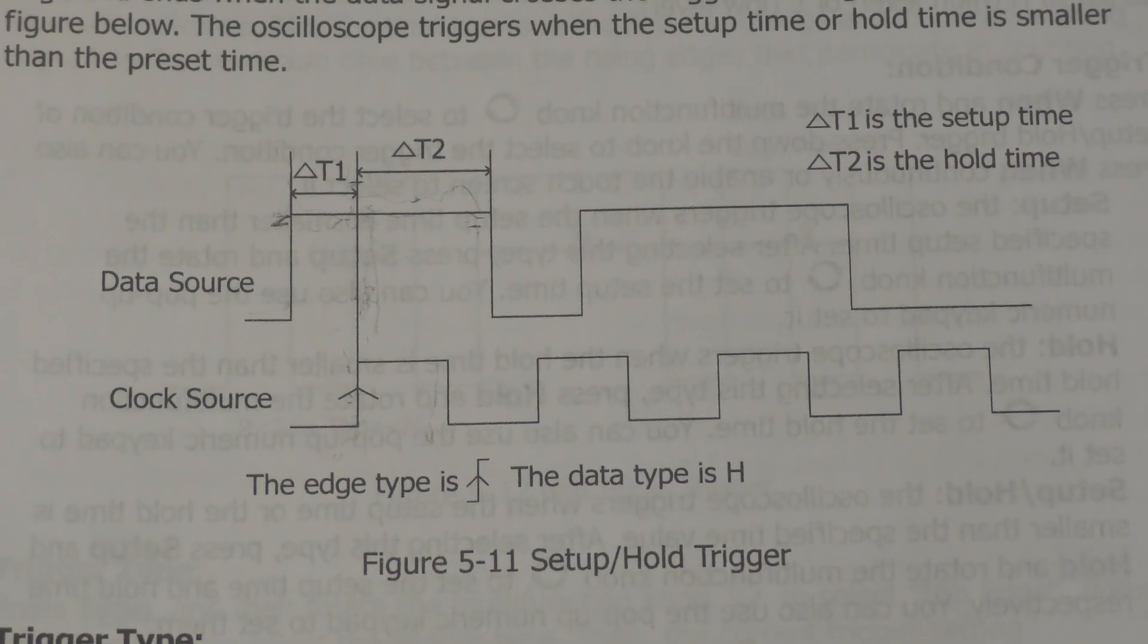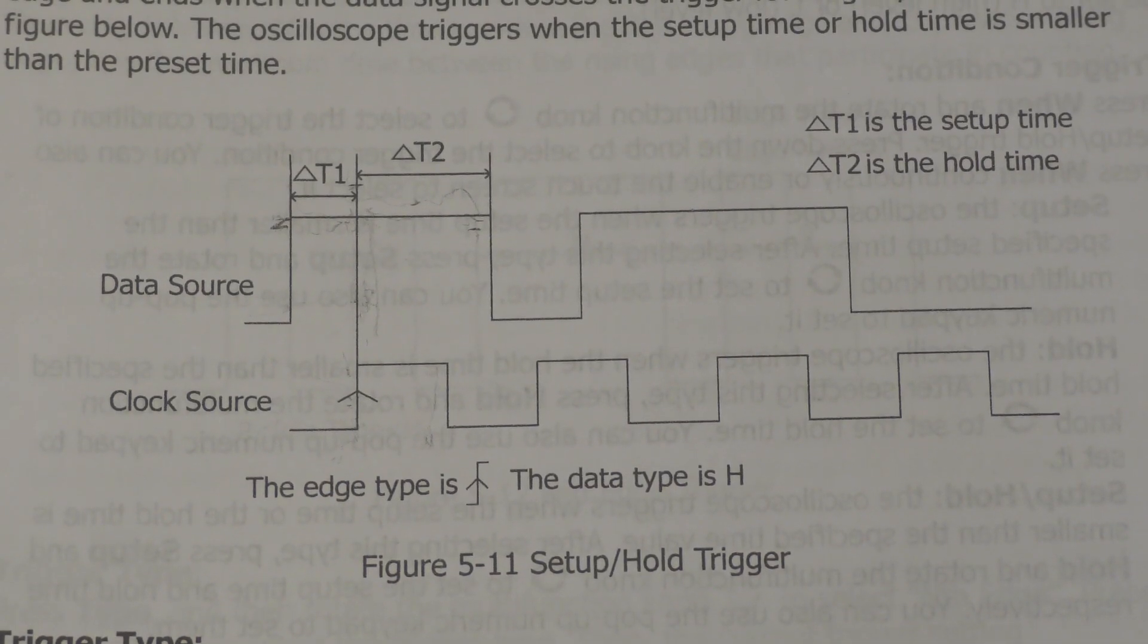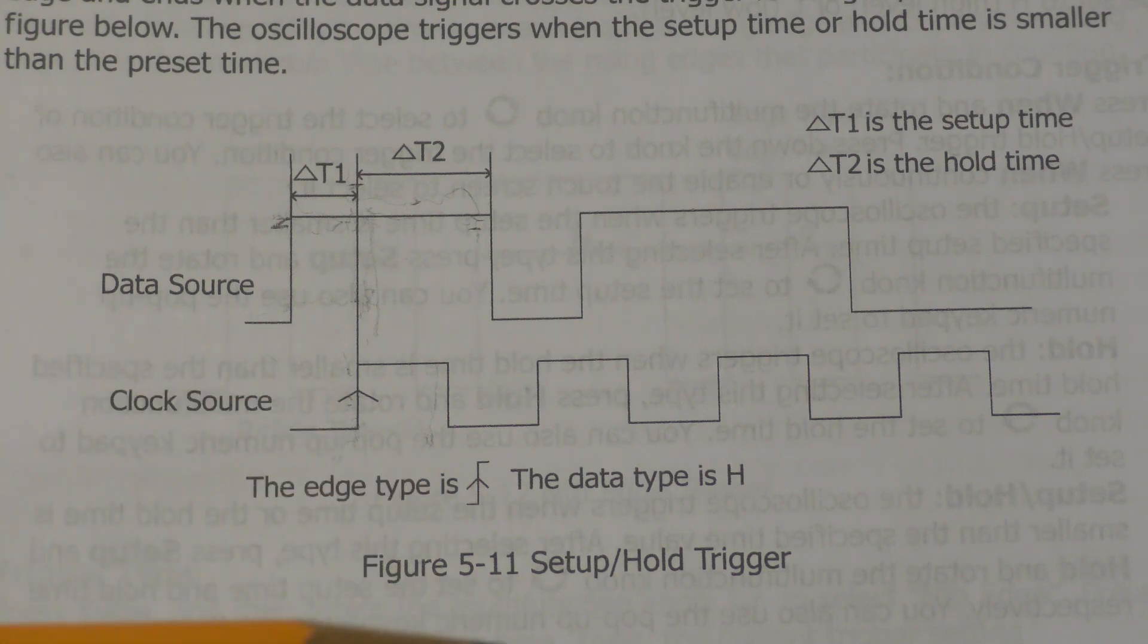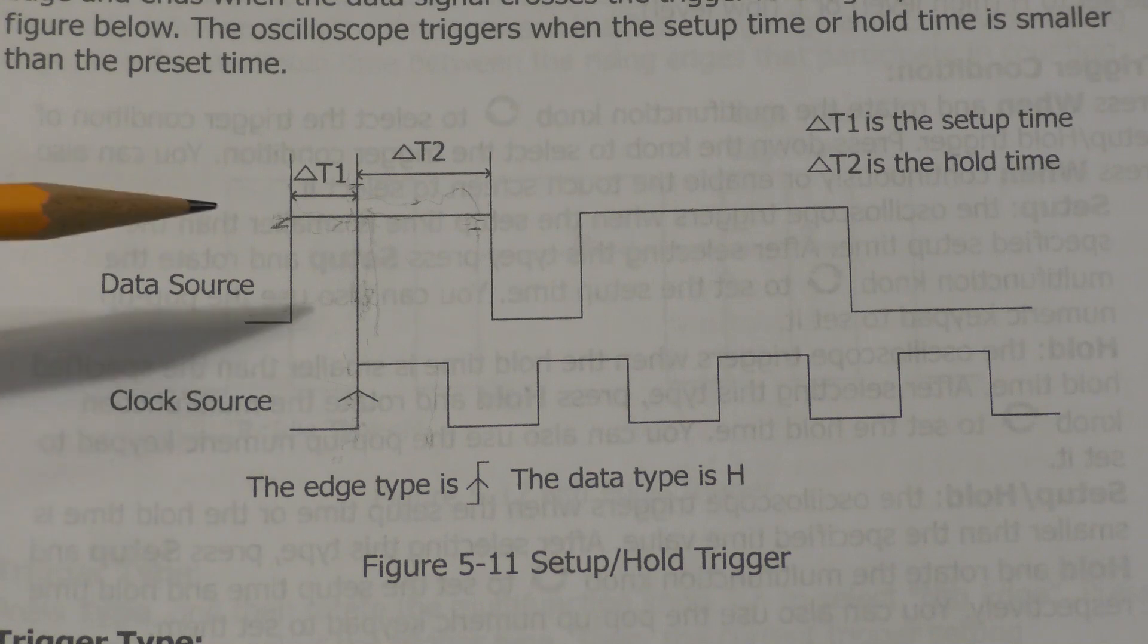Here is an illustration from Chapter 5 of the MSO5000 manual about setup and hold triggers. The purpose of a setup and hold trigger, and by the way it's a setup, or hold, or both trigger, we'll look at that later when we look at how we actually configure this on the oscilloscope.